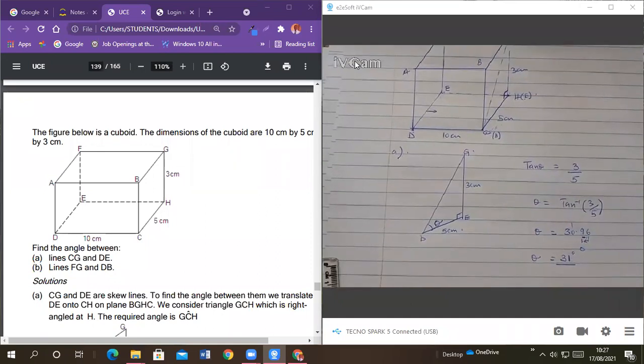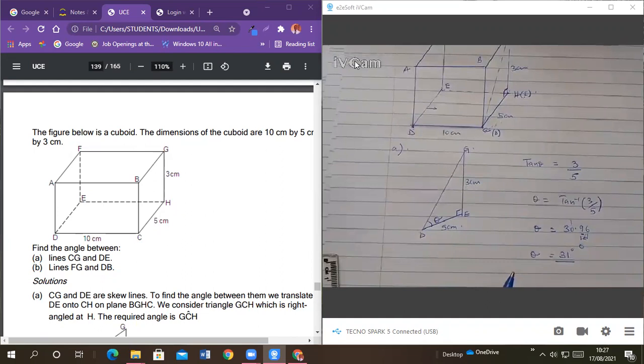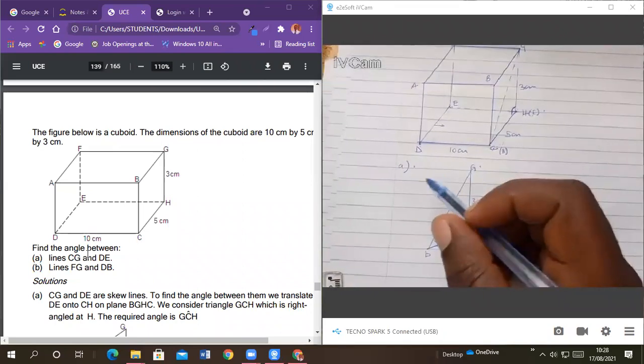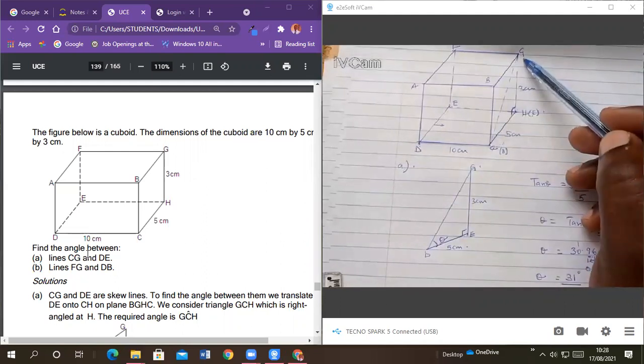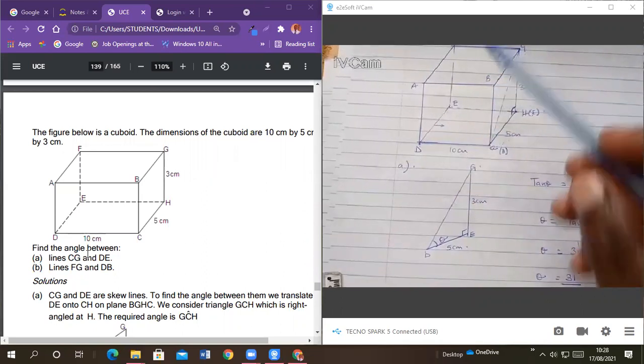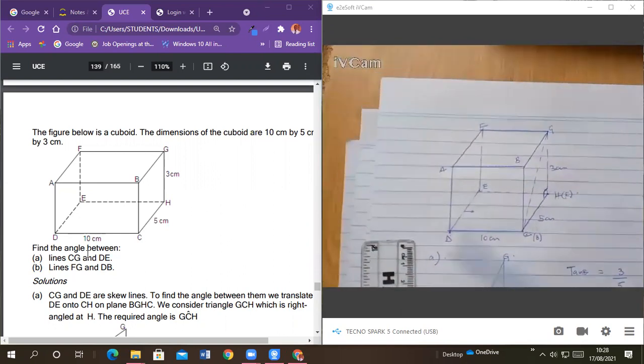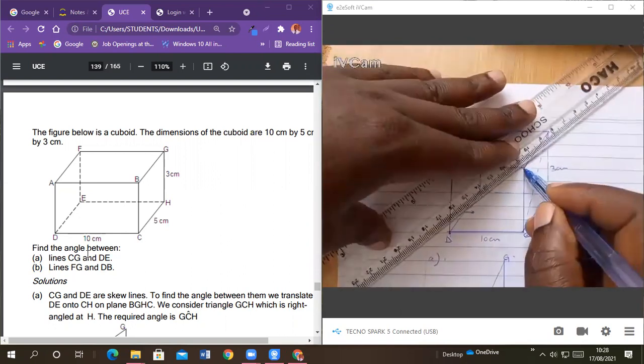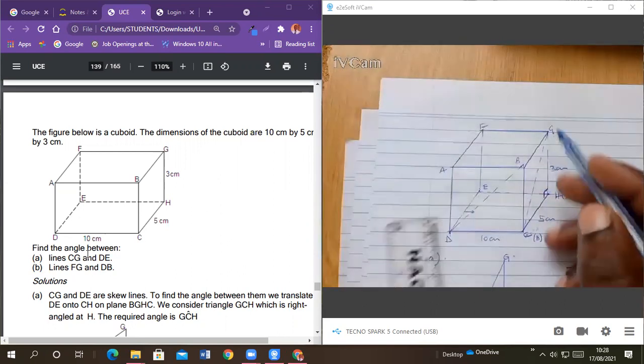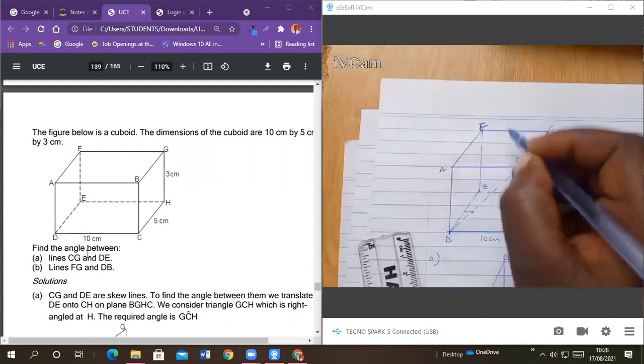Okay, lastly, part B. So part B, find the angle between F... the angle between FG, FG and DB. So this is BE. FG and DB. So what we are going to do, this is DB that we are talking about. Yeah. And this is FG. This is FG.